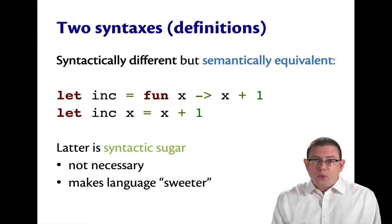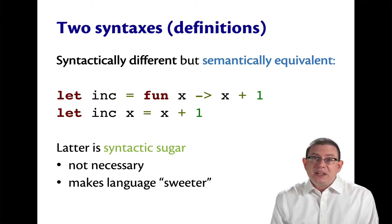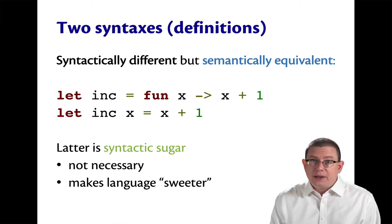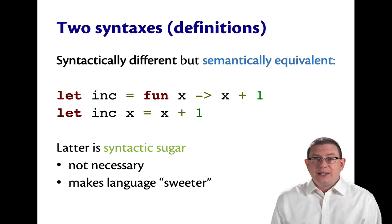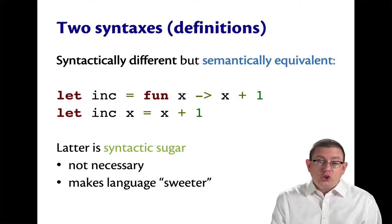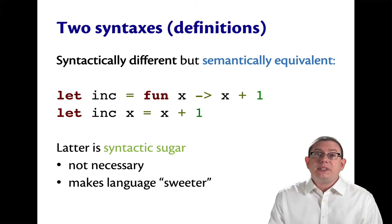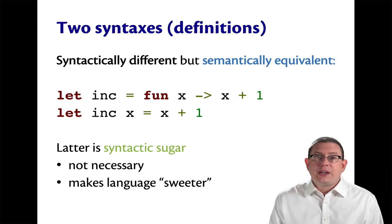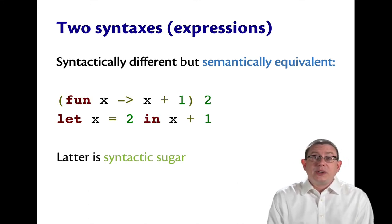The first form with the `fun` keyword is the more primitive form, but it's not as sweet. The second form, where we put the argument on the left, is a little sweeter and a little nicer to write. We could get away without it, but isn't it nice that the language has it for us? Syntactic sugar is something we're going to see a lot of, because OCaml is designed such that more complicated expressions in the language can actually be reduced to simpler kinds.